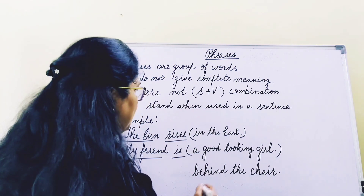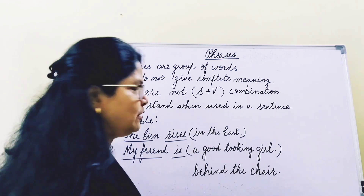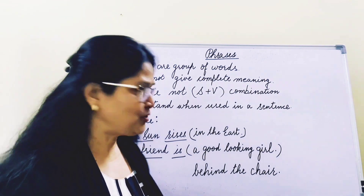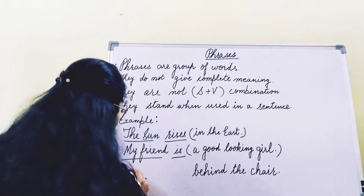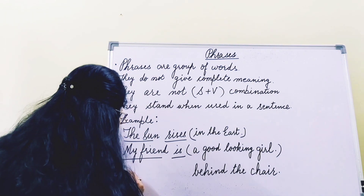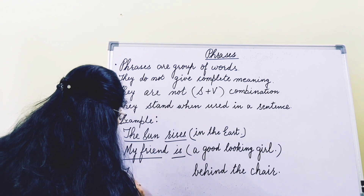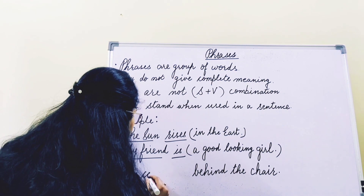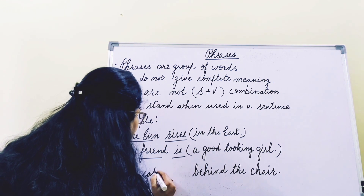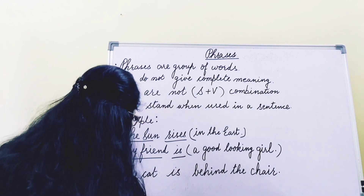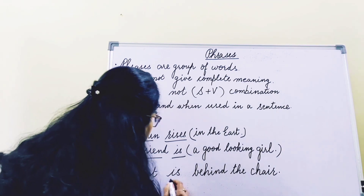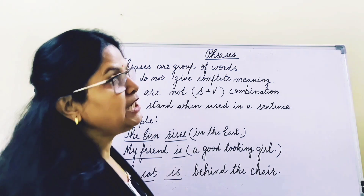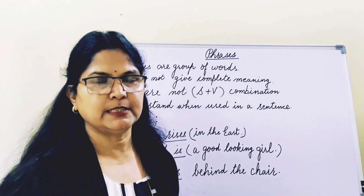Third example: 'behind the chair.' What is behind the chair? It's not clear. So, if I write 'the cat is behind the chair' — the cat is the subject, 'is' is the verb. Now it's giving a complete sense.